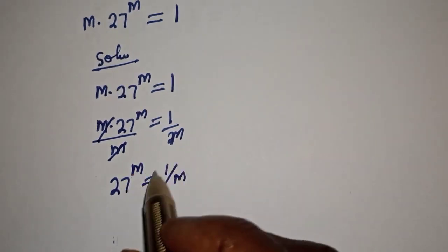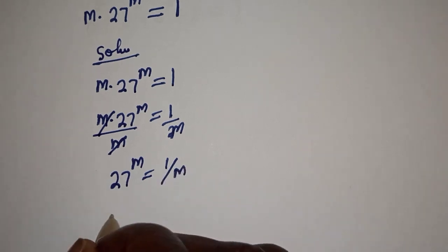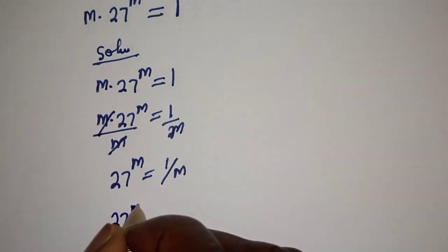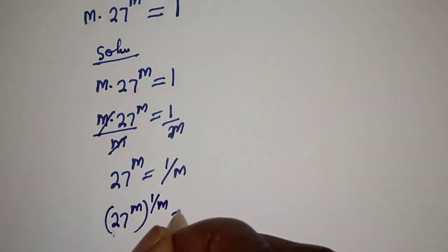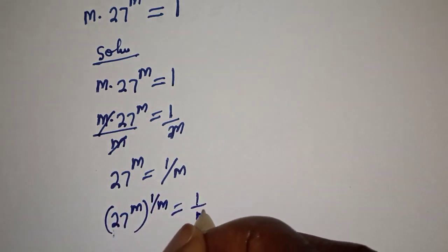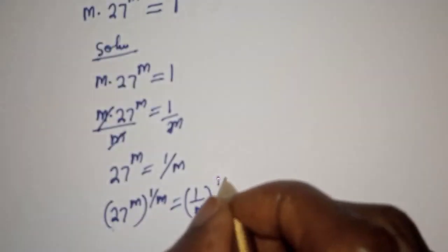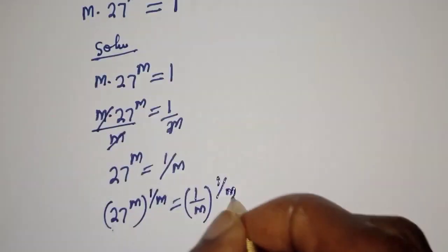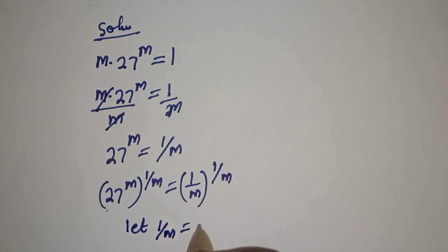Let's multiply the exponent of both sides by 1 over m. So 27 raised to power m, to the power of 1 over m, is equal to 1 over m to the power of 1 over m. Let s equal 1 over m.